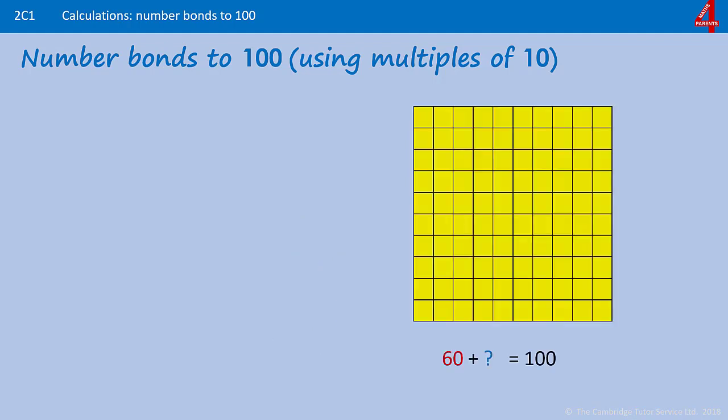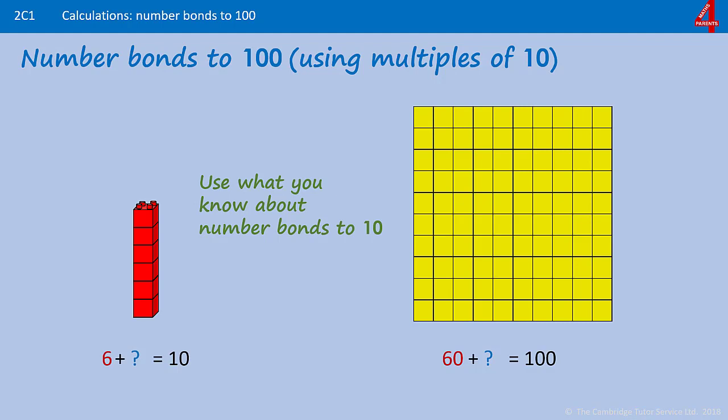Have a go at this one. 60, add what, is 100. Use what you know about your number bonds to 10. If you know that 6 add something is 10, think about what that something is.